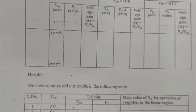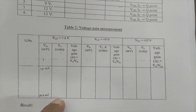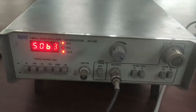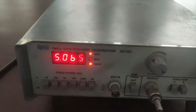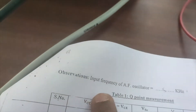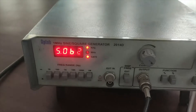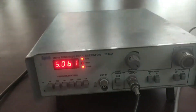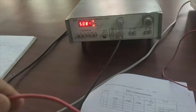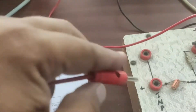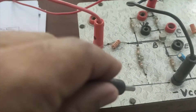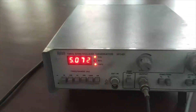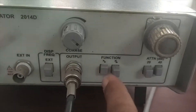In the second part, we apply an input frequency from the audio frequency generator fixed at 5 kHz. Using the frequency range knob, we set the oscillator to 5 kHz and connect its output to the input terminals of the amplifier — positive to positive and negative to negative — supplying a sine wave signal at 5 kHz.